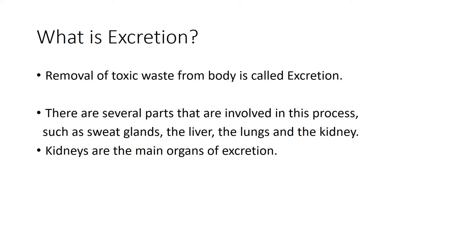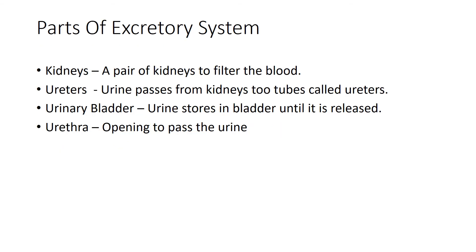In the excretory system, the main organs are the kidneys. The kidneys are the main functional unit of the excretory system — this is a common exam question. Inside the kidney, urea and uric acid are processed and passed out through urine. Now let's see what the parts of the excretory system are.